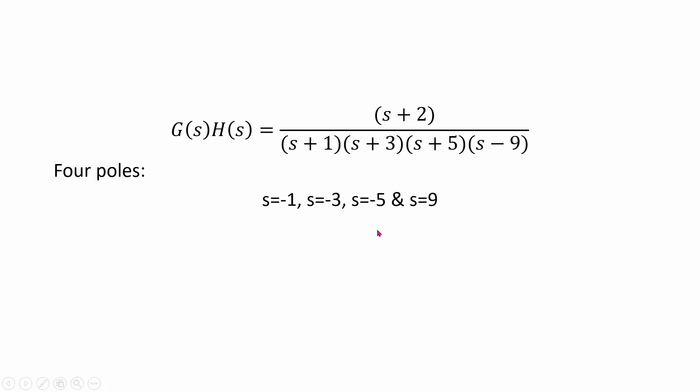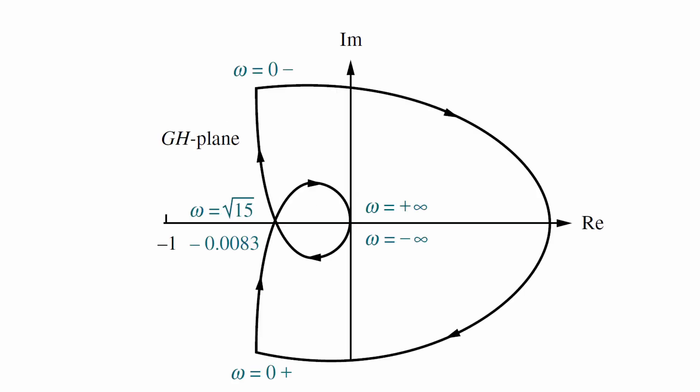So all of these three poles will be lying on the left side of the plane and thus the system does not have any pole on the right hand side. And let us assume that there was a term S minus 9 in the denominator. In that case, the fourth pole would have been S equal to plus 9 which would have been lied on the right hand side of the plane.